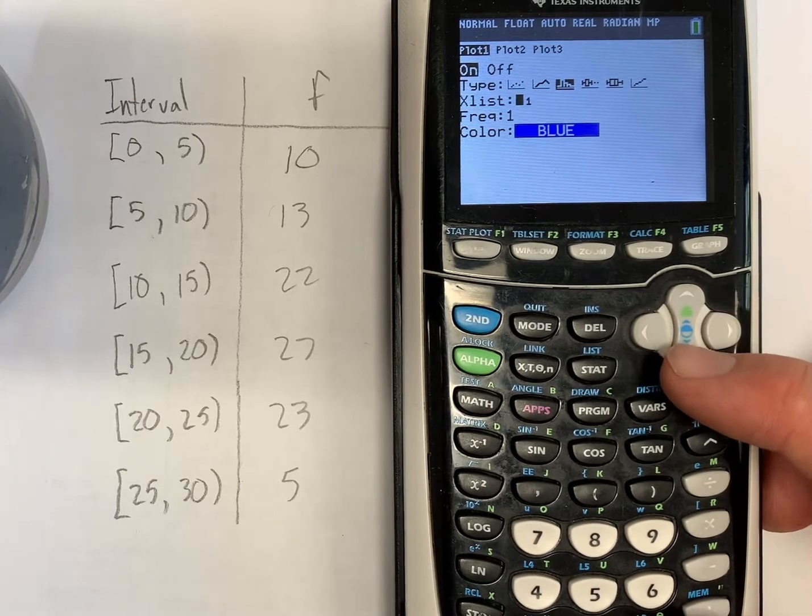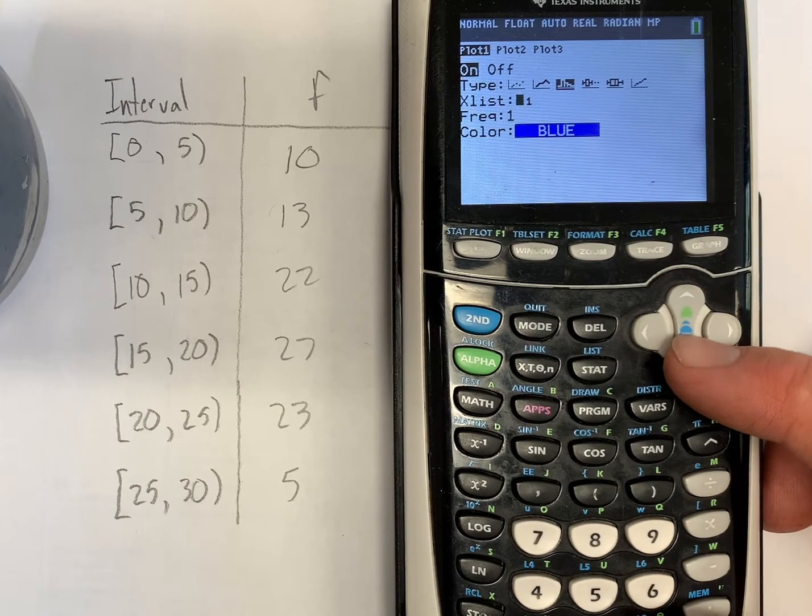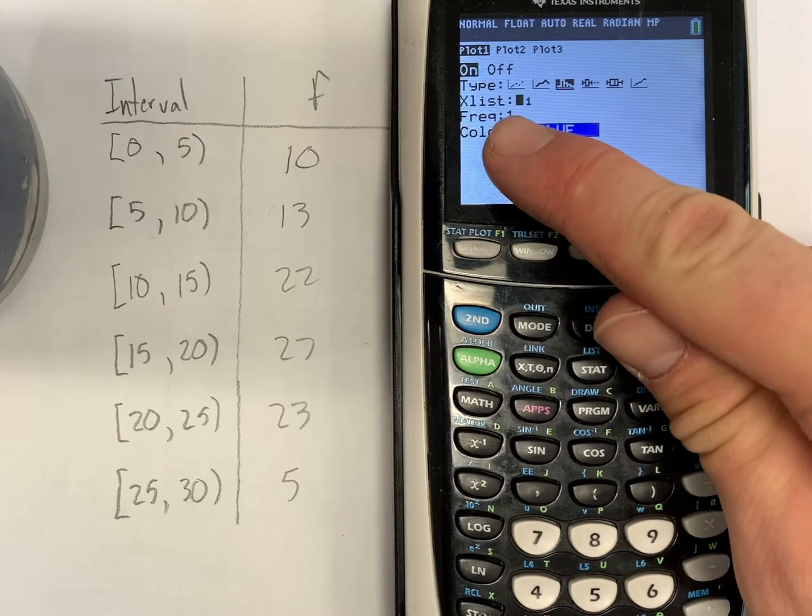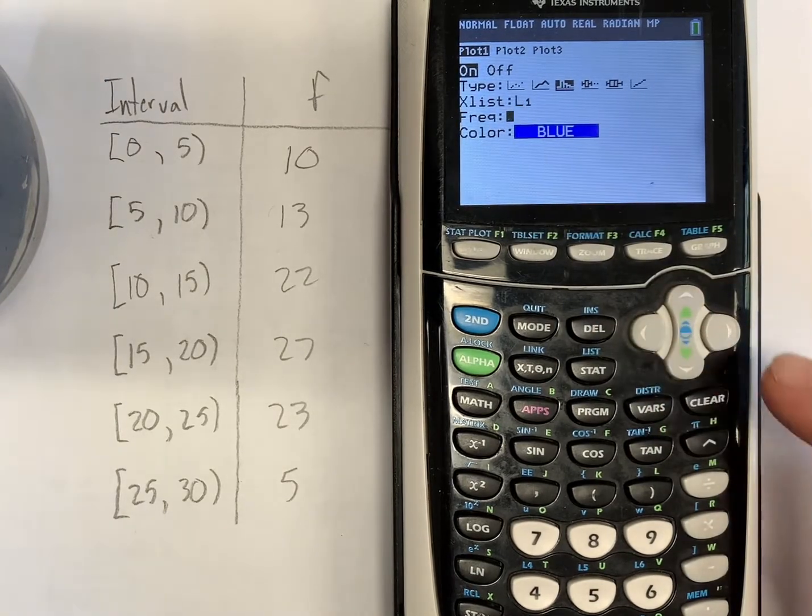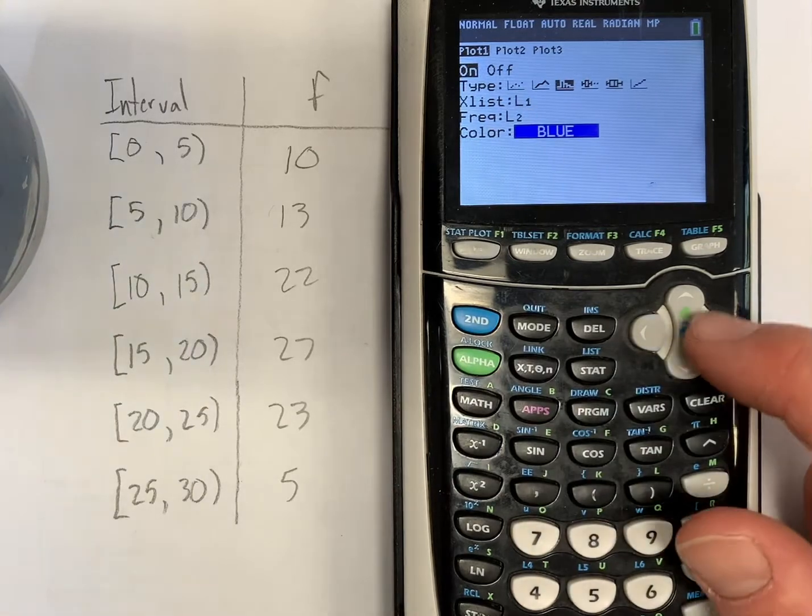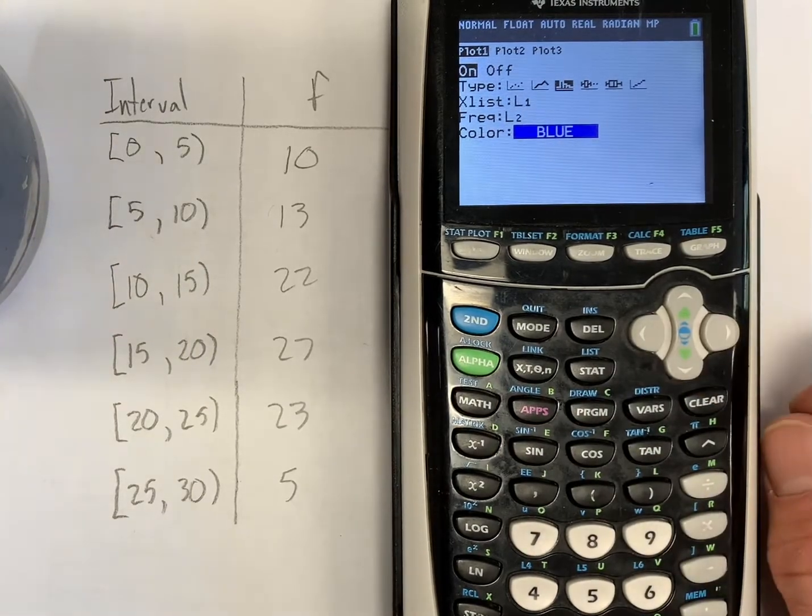Now it gives us options for our x list and our frequency. So we can set up a frequency list and an x list. I have my mid-interval values stored in L1. So I'll put my frequencies in L2. So I'll just second function 2 to bring up L2 and I should be able to construct my histogram.